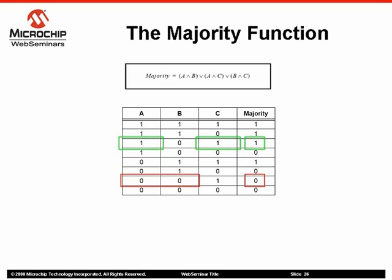The majority of the values can be expressed using two logic operators: AND and OR operators. As shown in the equation, it is the result of the OR of the AND operation between A and B, A and C, and finally B and C.